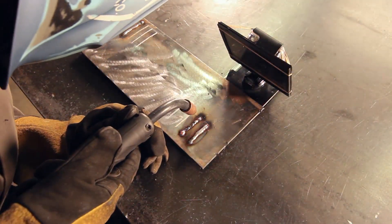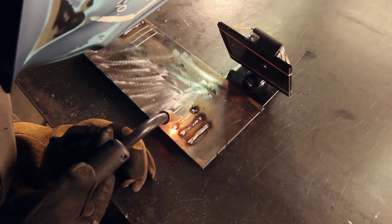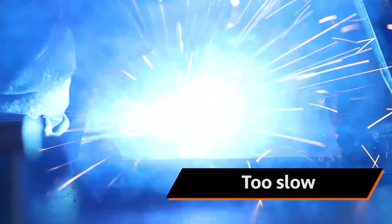For the third weld, I'm going to puddle up too much and go too slow. You're going to see that the puddle is going to wet out too wide and you're going to have a lot of penetration going through the material itself.